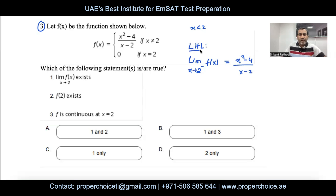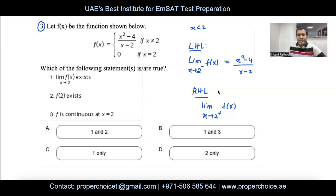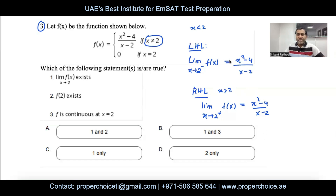Now checking the right-hand limit: limit as x → 2⁺ of f(x). When x is slightly greater than 2, we again use the expression (x² − 4)/(x − 2) — because as per the piecewise condition, that expression applies for all x not exactly equal to 2.